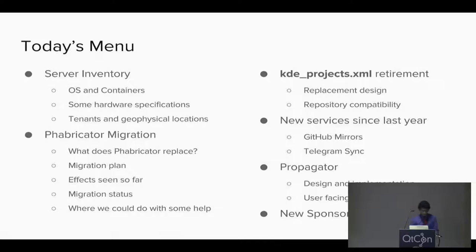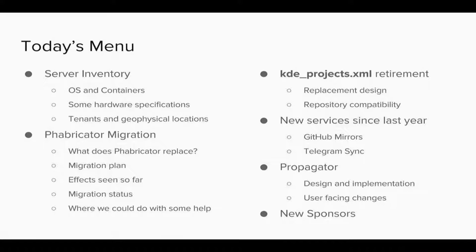So what do we have on today's menu? This is not all of it — there's so much stuff we're doing — but this is majorly what we're going to cover. I'll take you through the kind of servers we have. It's not a comprehensive inventory, but you'll get an idea of the hardware we operate on. Then Fabricator migration, kde-projects.xml which had to be retired and replaced last year, and we want to take that forward.